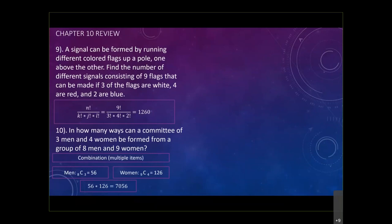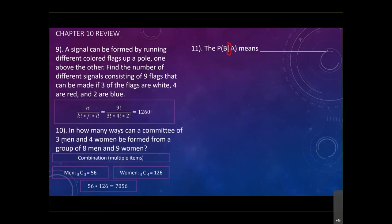Moving to the second half of chapter 10, which is probability. In the beginning they want to refresh you on what certain notation means. For example, probability B given A — when you see that vertical line, that slash, it should remind you that this is a conditional probability. It means: find the probability of B given that A has already occurred.